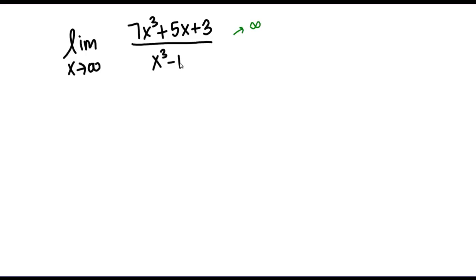What about the denominator? On the bottom I've got x cubed minus 1, and as x goes to infinity, this is also going to get arbitrarily large. The minus 1 isn't going to make any difference in the scheme of infinity. So my denominator is approaching infinity as well. What happens is I get this form infinity over infinity, and this happens very often when you take the limit as x goes to infinity of a rational function. This is what's called an indeterminate form.